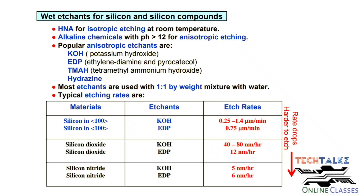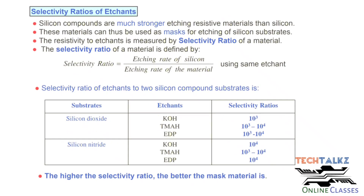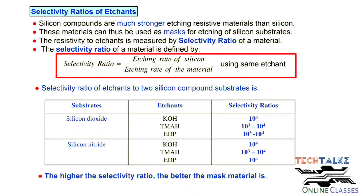Looking at the etching rate table for silicon, silicon dioxide, and silicon nitride: using KOH, the anisotropic etching rate for silicon is up to 1.4 micrometers per minute; using EDP it is 0.75 micrometers per minute. KOH is selected for etching silicon when a higher rate is needed; EDP is used when controlled etching is required. For silicon dioxide and silicon nitride used as mask layers, the etching rate is less than 1.5 nanometers per minute compared to silicon — meaning very high selectivity.